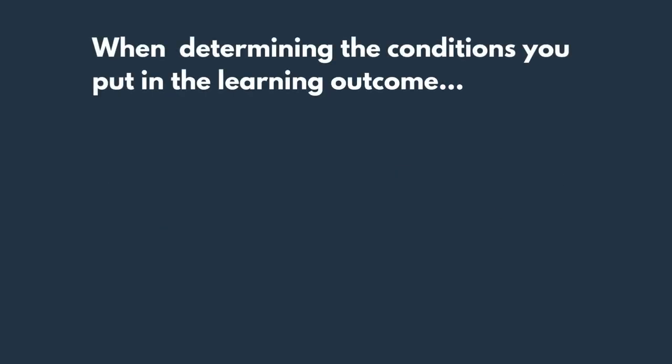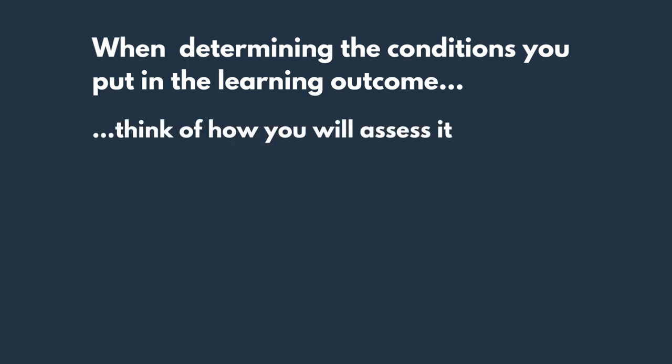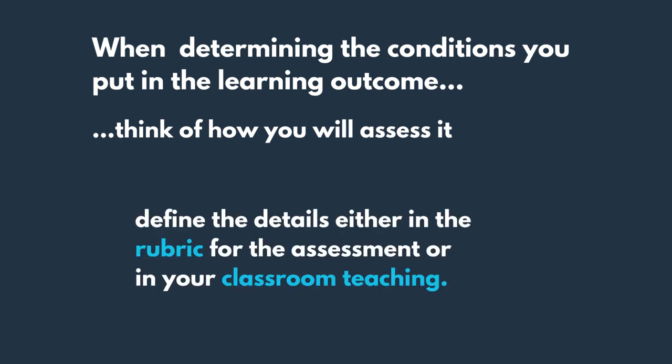When determining your conditions for achieving the outcome, you may begin thinking of the way that you're going to assess the outcome. So how much detail should these conditionals contain? What goes into the main outcome and what goes into the rubric or the assessment form? Try to keep the outcome somewhat general and use your classes and assessment form to lay out the details. The term 'professional,' for example, may mean structured, easy to follow, using correct language, etc. These defining terms and details will have a place in the rubric or the assessment form, and will also shape your classes.